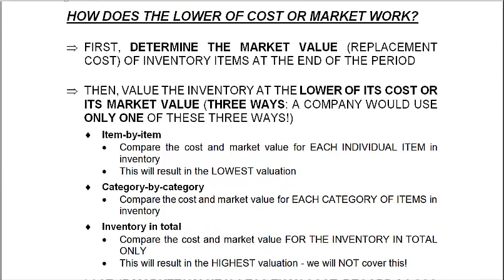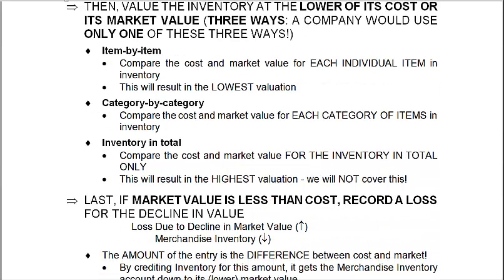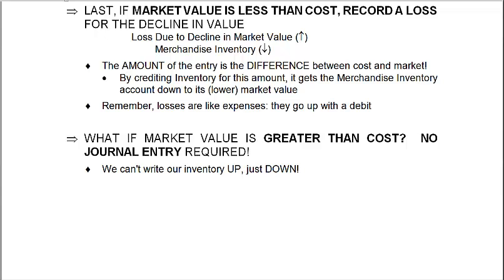How does lower of cost or market work? At the end of the period, you already know what each item in inventory cost you. You next need to determine its market value — the replacement cost, what you would pay to buy that item again today. Then we value the inventory at its lower of cost or market. There are three ways to apply this: item by item, category by category, or as inventory in total. We'll only cover item by item and category by category. If the valuation is less than what inventory cost us, we make a journal entry to record that difference.